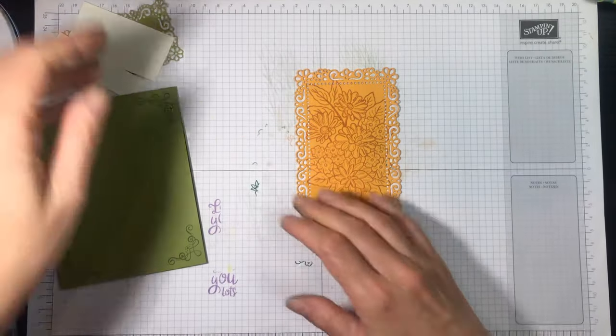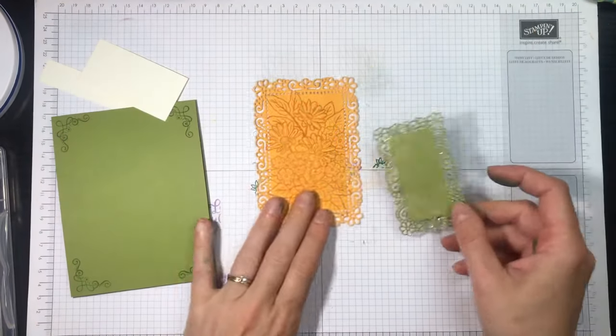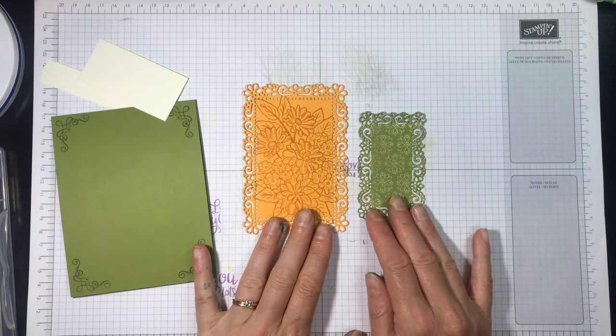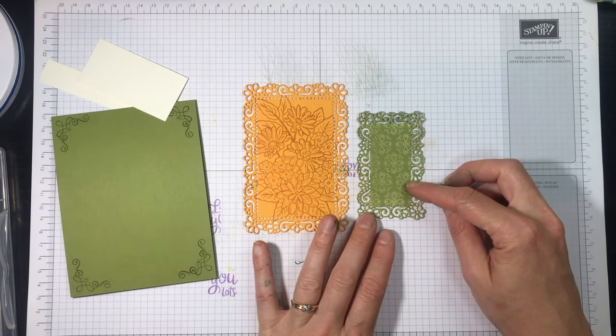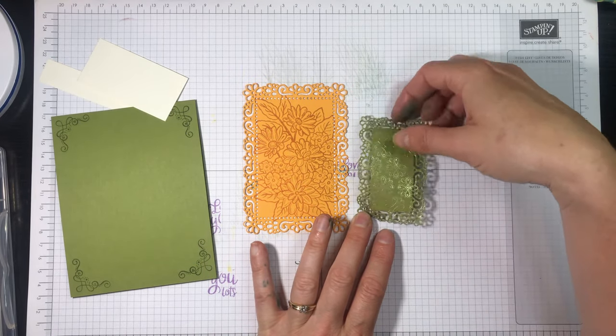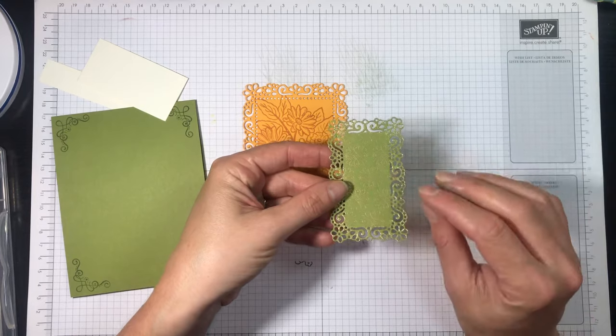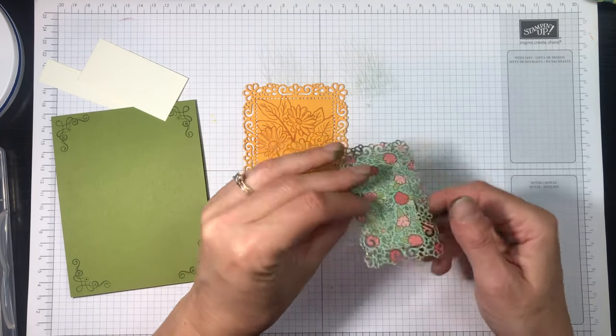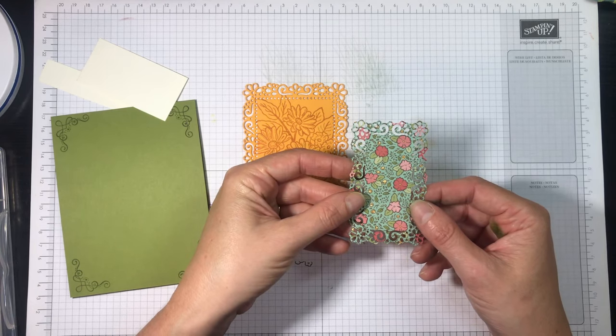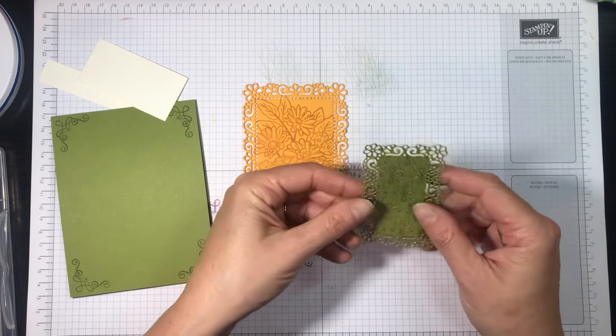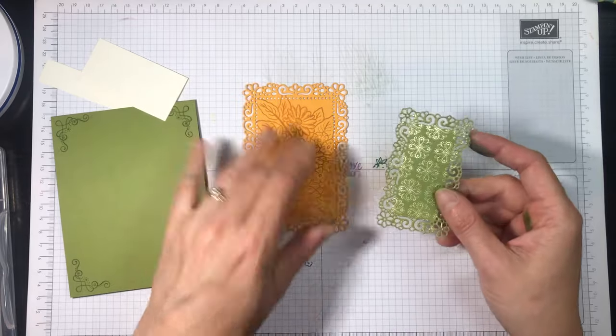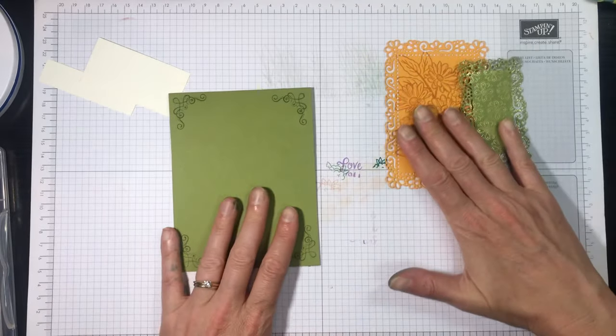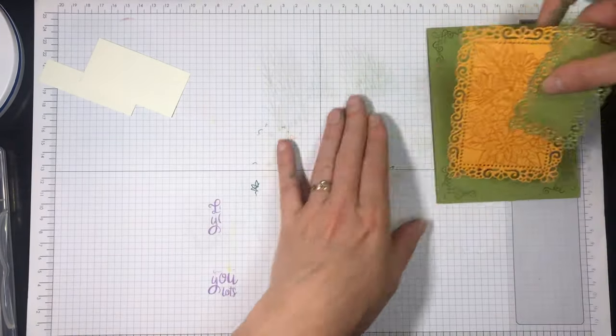Alright moving on, from that same Ornate Layers die set I've die cut a piece of Ornate Garden Designer Series paper. This is Old Olive and it's got some gold foil in it. Can you see that? And this is the flip side of that pattern. So you could use this side if you want to but I'm going for this one because I want that touch of gold in my card. So we're gonna set these pieces aside for now.